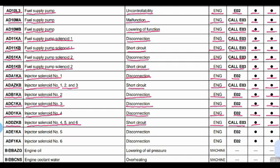Code ADE1KA: the part is injector solenoid number 5 and the problem is disconnection. Controller is the engine controller. Action code E02. Lamp will blink and buzzer will beep.